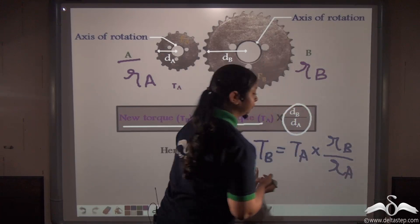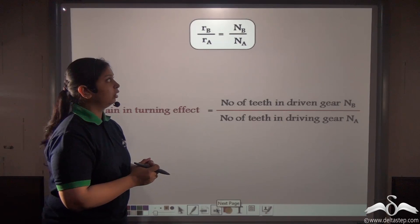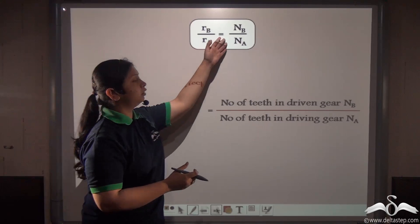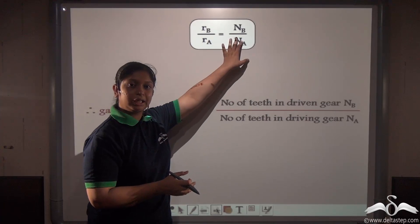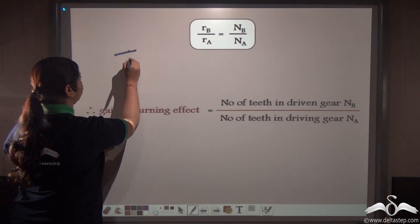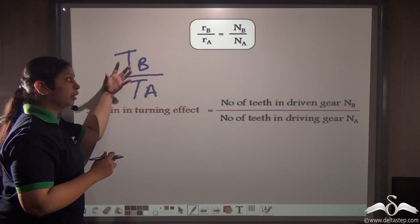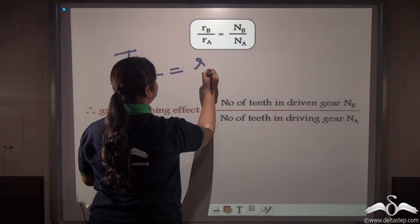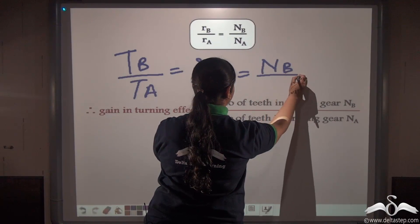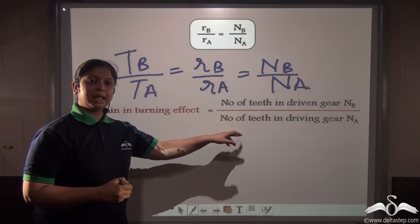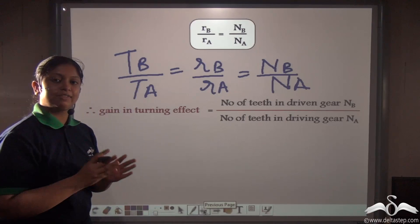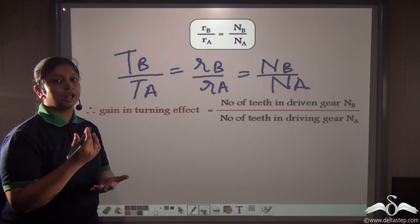From the principle of gear tooth action, the ratio of the radius of the driven wheel to the radius of the driving wheel equals the number of teeth of the driven wheel divided by the number of teeth of the driving wheel — and this is the gear ratio. So the gain in turning effect equals torque of B divided by torque of A, which equals RB divided by RA, which can be written as NB divided by NA — the number of teeth of the driven gear divided by the number of teeth of the driving gear. We have successfully expressed the gain in turning effect in terms of the number of teeth of the gear system.